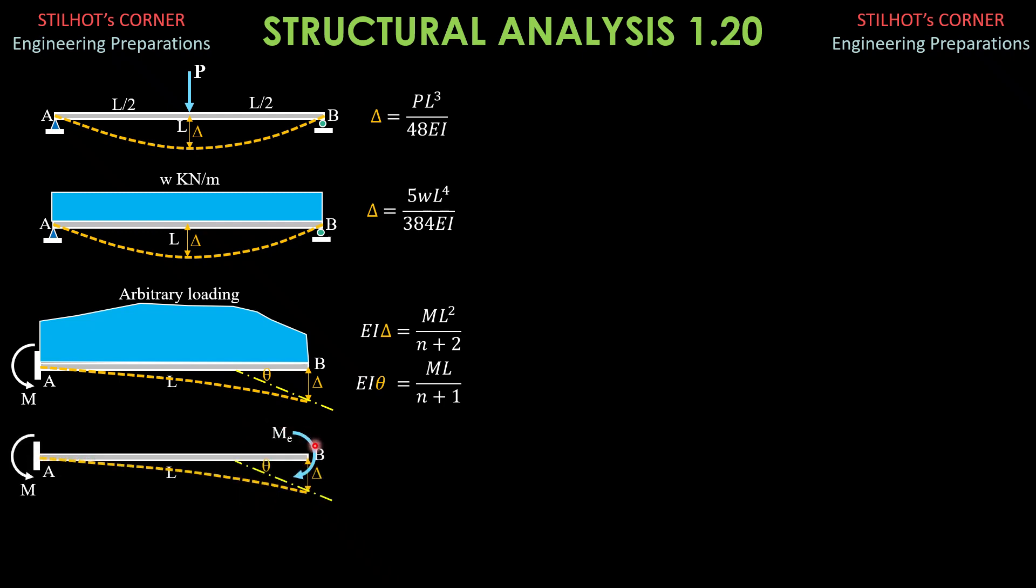For this type of loading, we have a couple at the end, so the degree is 0. The moment at the wall is also ME. So, ME L squared over 0 plus 2, EI delta is ML squared over 2, ME L squared over 2. Then, EI theta equals MEL over 0 plus 1, so it's MEL only.